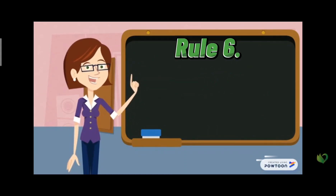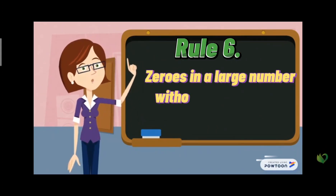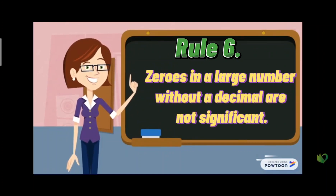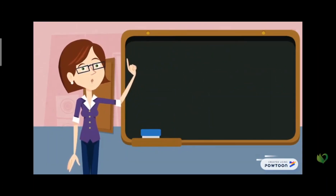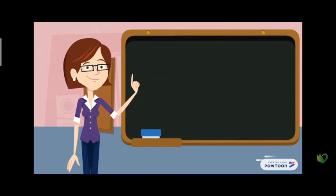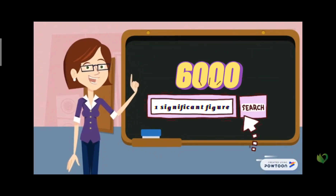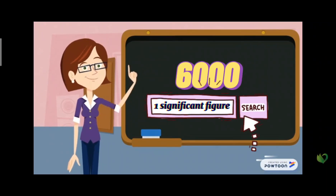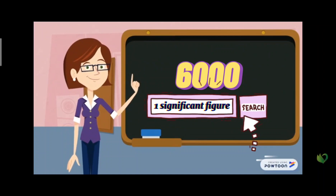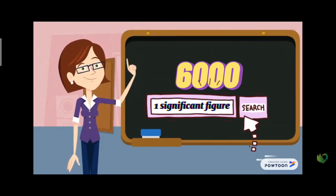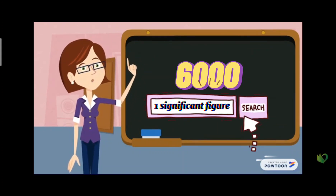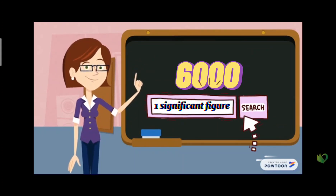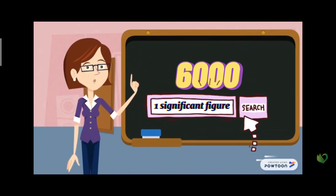Rule number six: zeros in a large number without a decimal are not significant. For example, 60000 has one significant figure. These four zeros are in a large number without a decimal, so they do not count as significant. Only the six does, so there is only one significant figure.